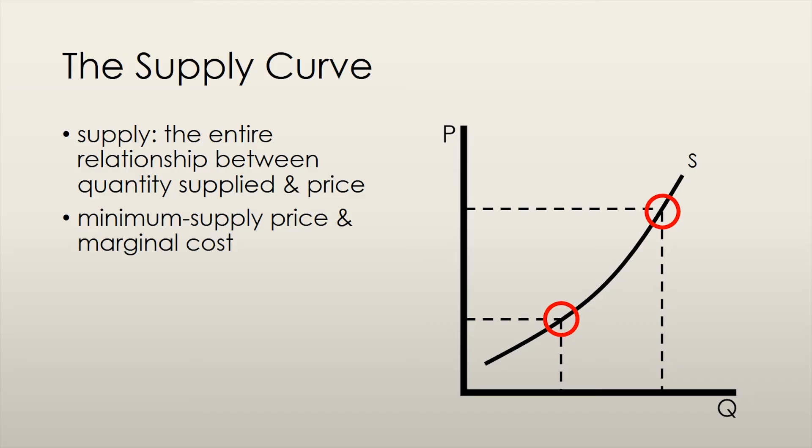We can interpret the supply curve as a minimum supply price curve. This essentially describes a curve that shows the lowest price at which firms are willing to sell an additional unit of a good. We just talked about how the marginal cost of production increases as we produce a greater quantity, and so the company wants to cover at least its cost of production, if not make a profit on top of that, for each good that it produces. Thus, the supply curve shows us the price required to induce a firm to produce each given quantity of that good.